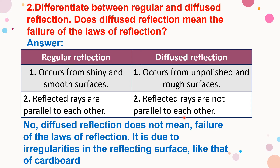In irregular reflection, the reflected rays are not parallel to each other. Does diffuse reflection mean the failure of the laws of reflection? No — diffuse reflection does not mean failure of the laws of reflection. It is due to irregularities in the reflecting surface, like that of cardboard.